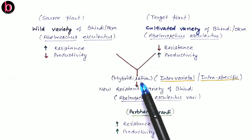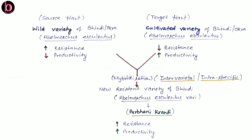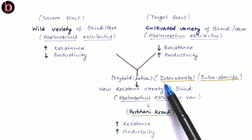In NCERT there is also another hybridization example involving two different species: Saccharum barberi, growing in north India, versus Saccharum officinarum, growing in south India. These are two different species, so crossing between them is known as interspecific hybridization. Both belong to the same genus, so it is also called intrageneric hybridization. In sugarcane there is intrageneric or interspecific hybridization, while in bhindi there is intervarietal or intraspecific hybridization.